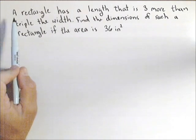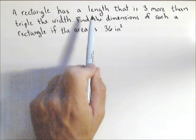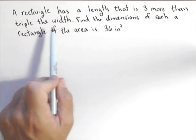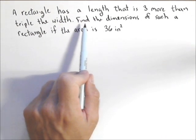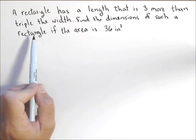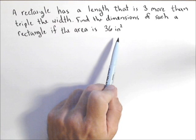In this problem, we have a rectangle that has a length that is three more than triple the width. We want to find the dimensions of such a rectangle if the area is going to be 36 inches squared.